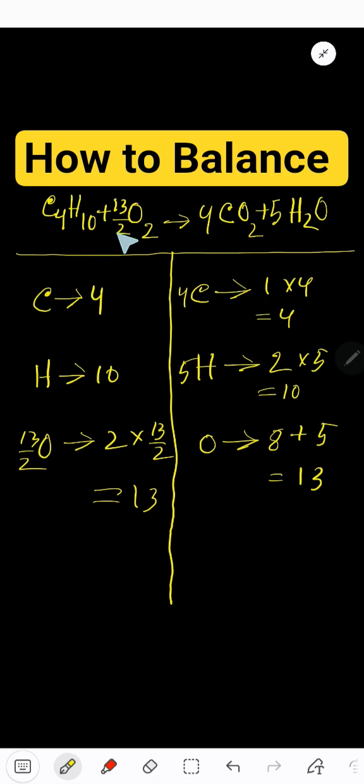To cancel this fraction, multiply whole equation by 2. So you will get here 2, then 13 over 2 times 2, that gives you 13. Then 4 times 2, that gives you 8. 5 times 2, that gives you 10. So now everything is whole number. So this is the equation.